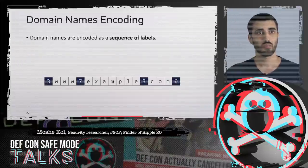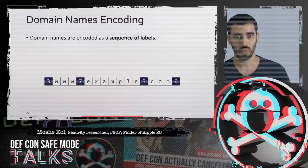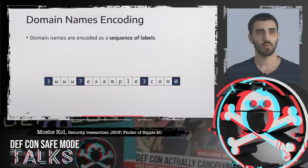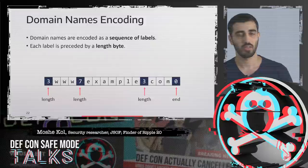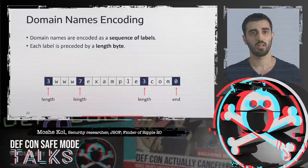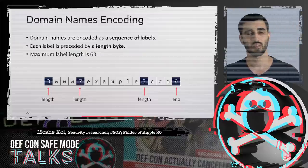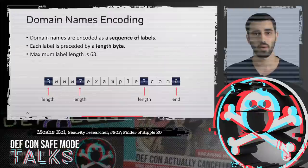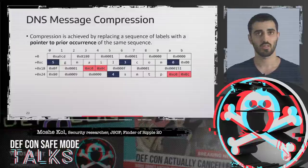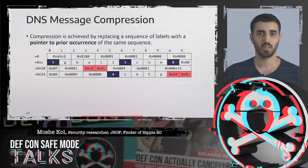A little bit about domain name encoding in binary format. Domain names are encoded as a sequence of labels — www is a label, example is a label. Each label is preceded by a length byte specifying the number of characters the label occupies. The domain name is terminated by a zero-length byte. According to the RFC, the maximum label length is 63. What the designers of the DNS protocol noticed is that there is a lot of repetition inside the DNS packet itself, so in an effort to reduce the size of DNS messages, they employed a simple compression scheme.